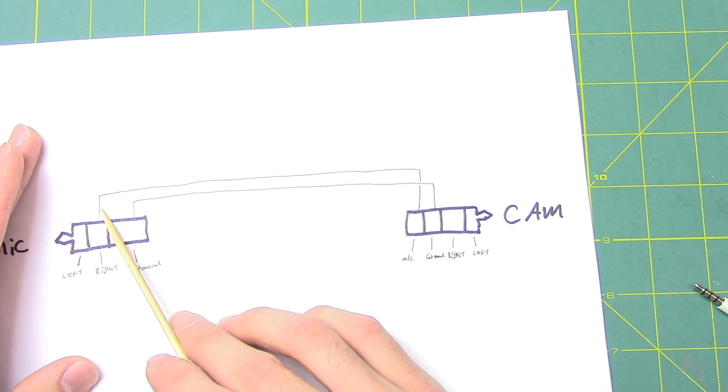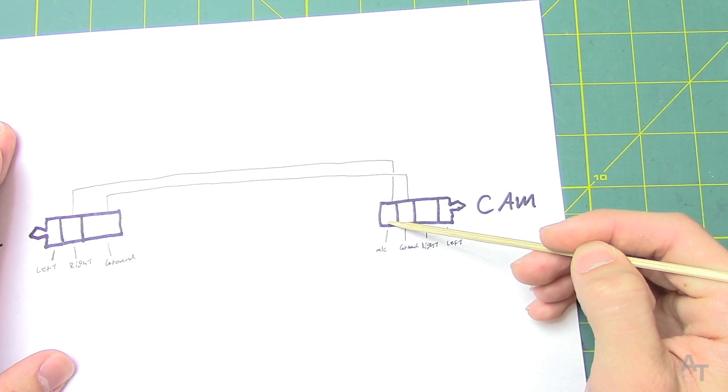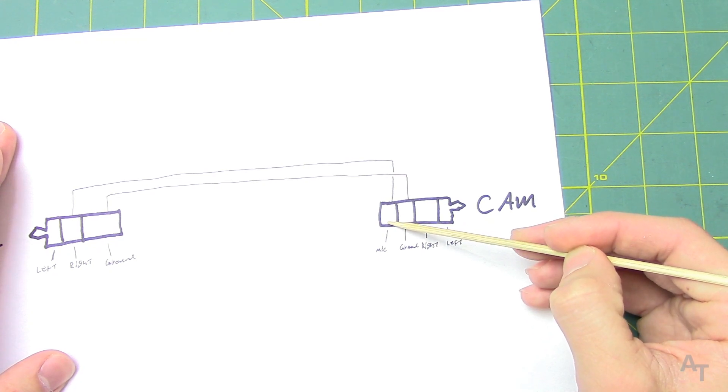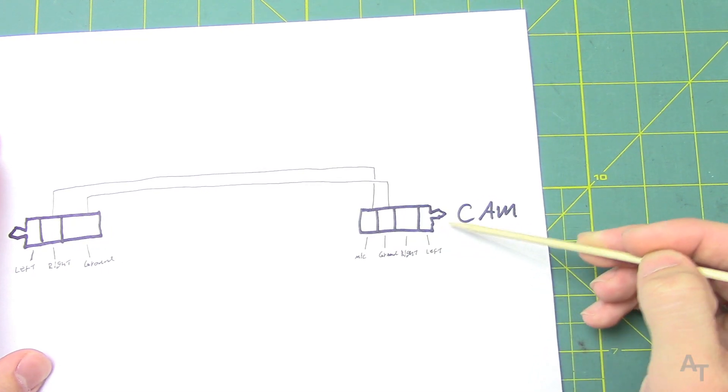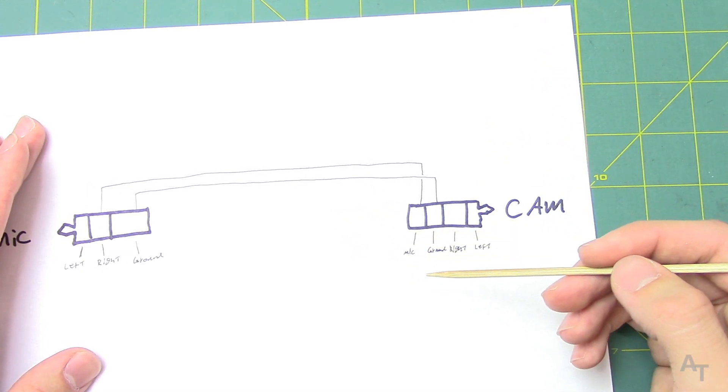You could use the left or the right audio. In this case I'm going to use the right. We're going to connect the right audio to the microphone cable on the TRRS headphone jack, which is going to connect to our camera, in this case a phone, a Samsung Galaxy S7.